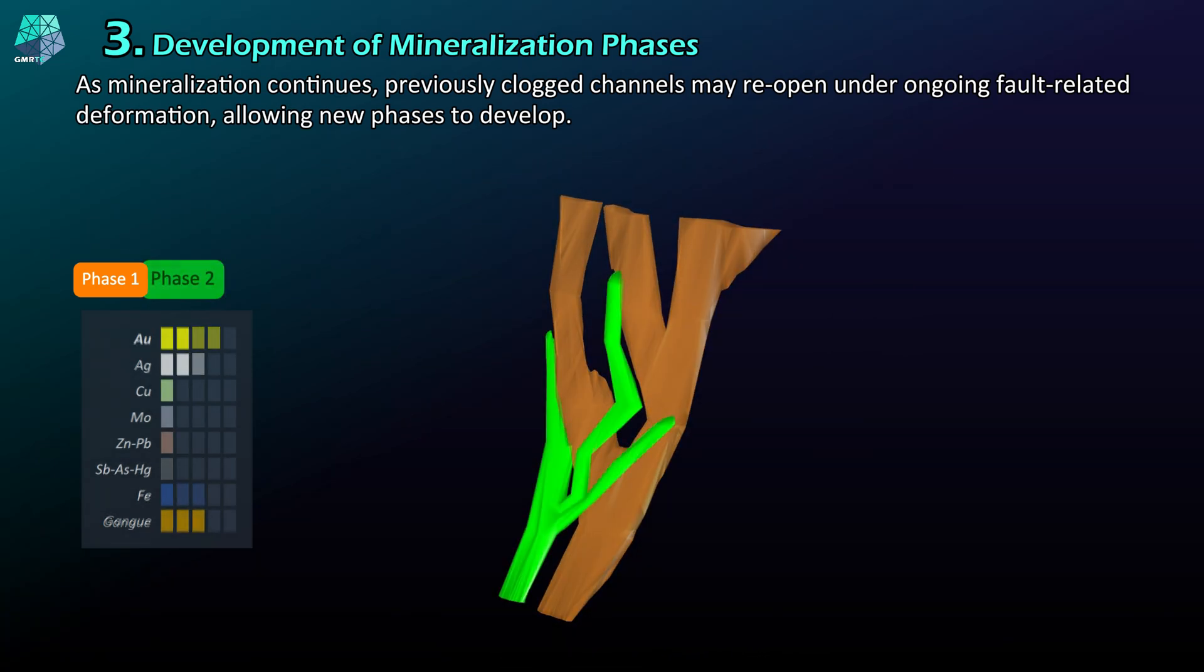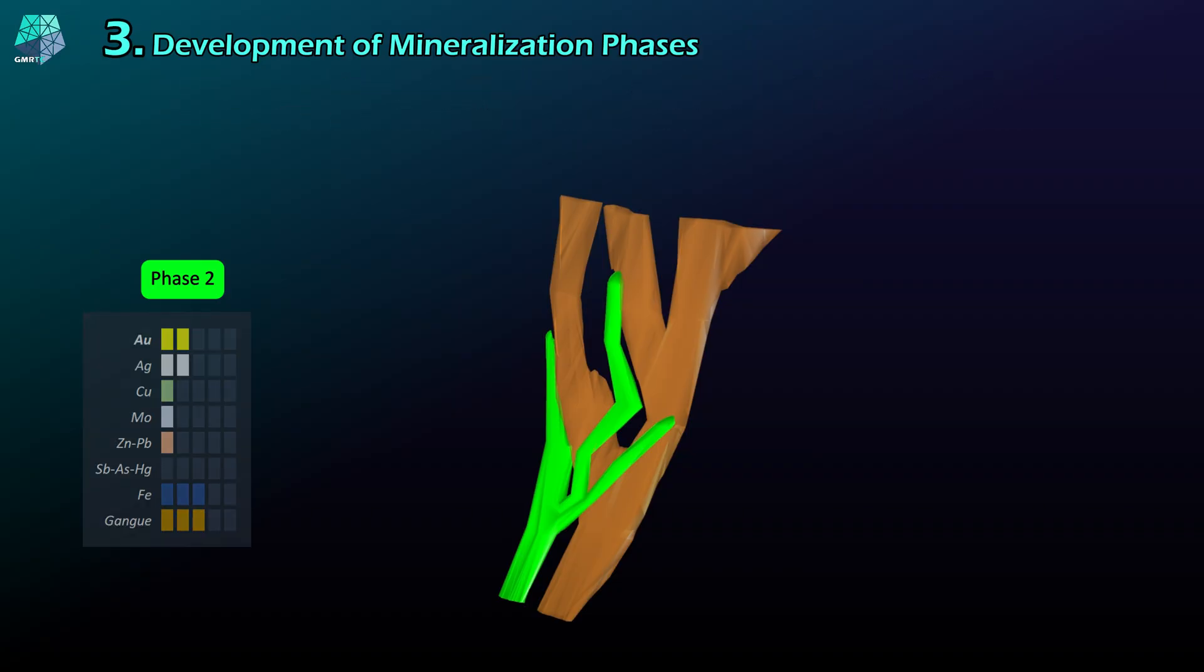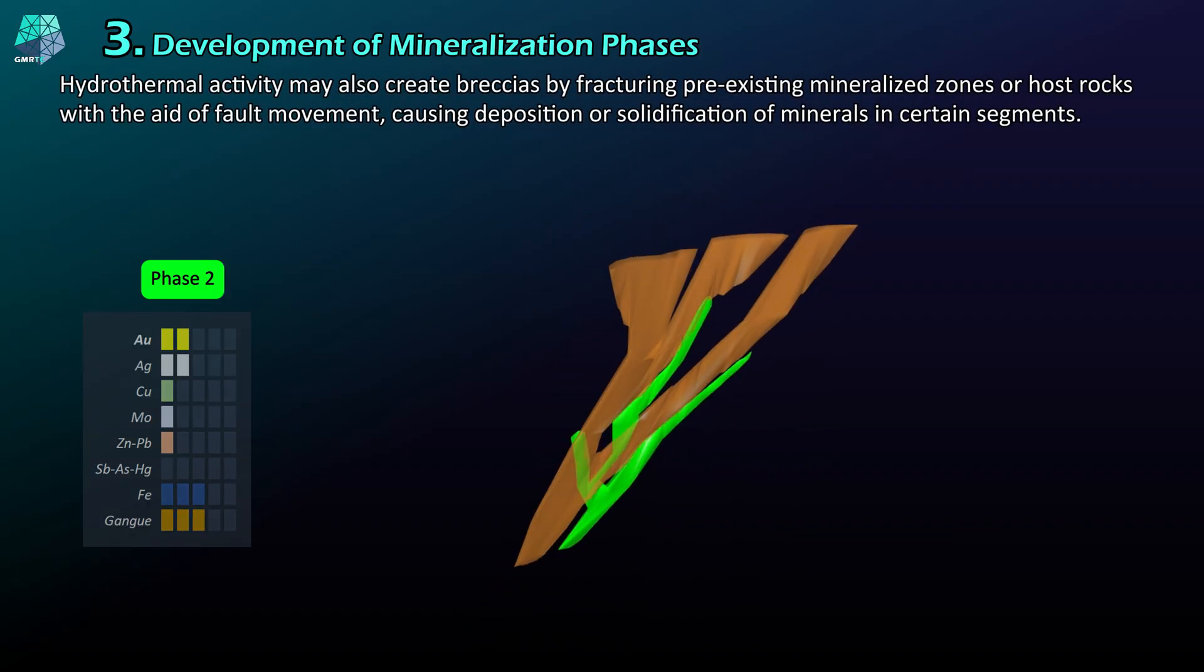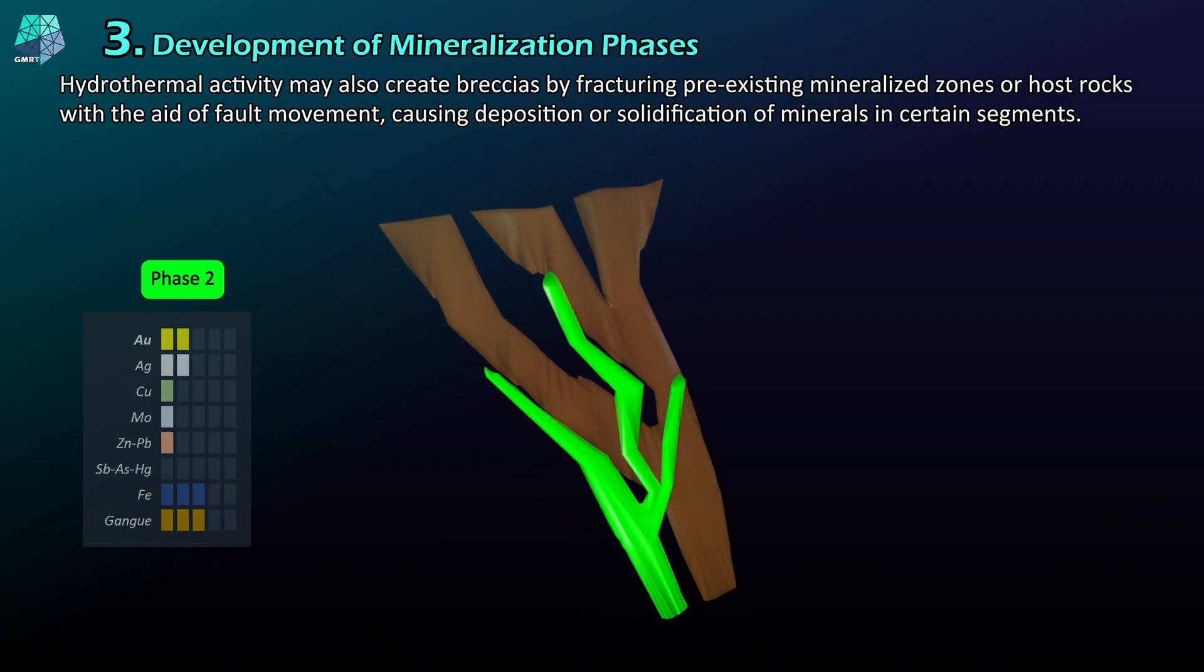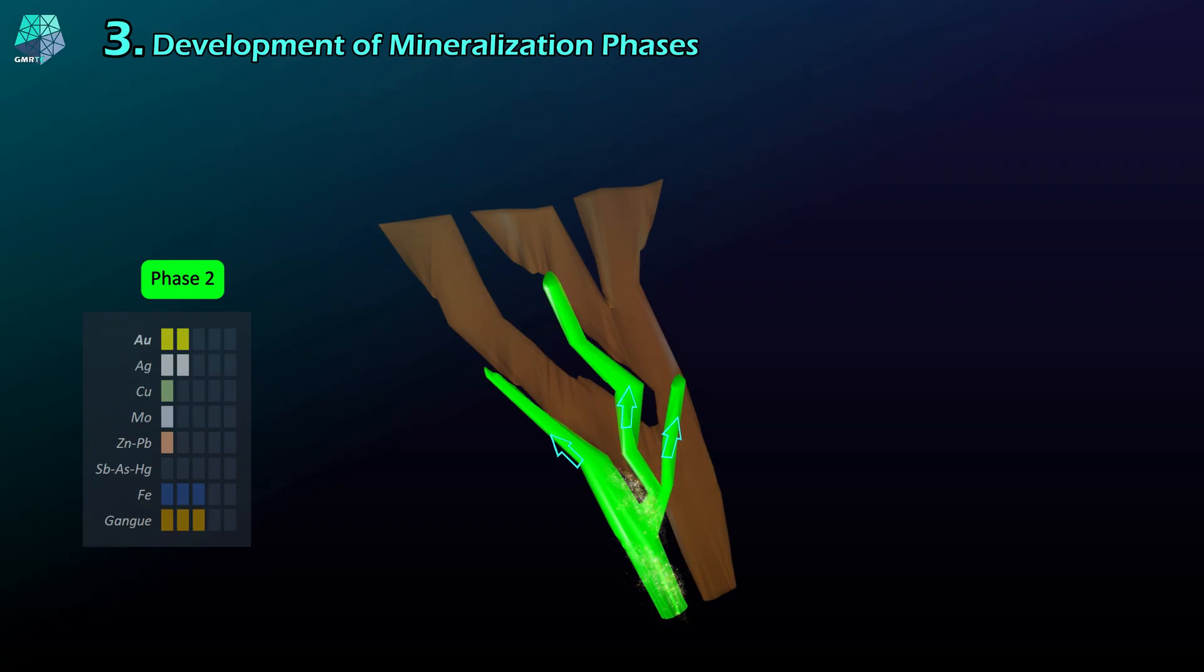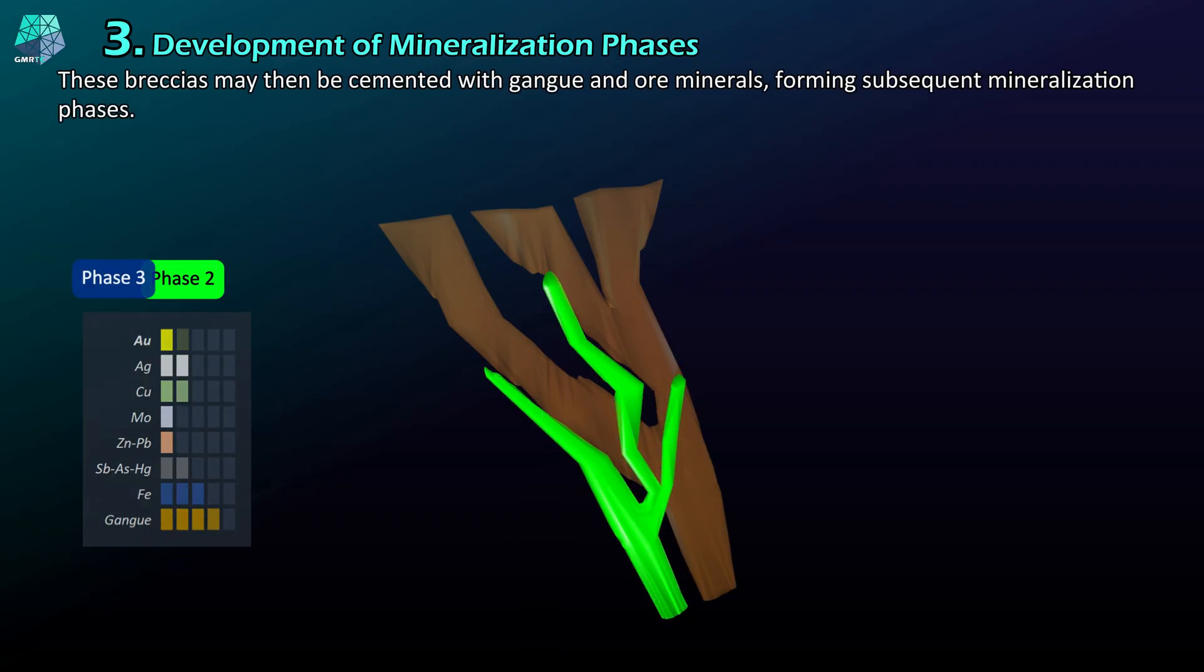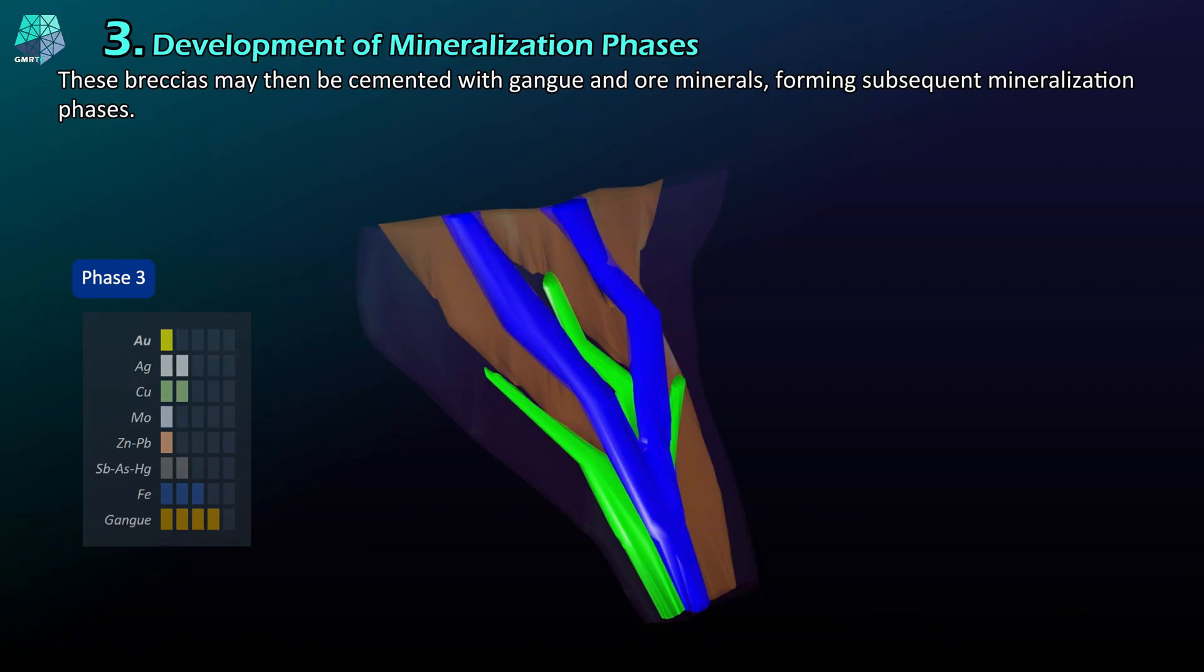Hydrothermal activity may also create breccias by fracturing pre-existing mineralized zones or host rocks with the aid of fault movement, causing deposition or solidification of minerals in certain segments. These breccias may then be cemented with gangue and ore minerals, forming subsequent mineralization phases.